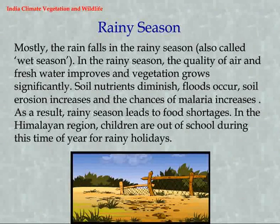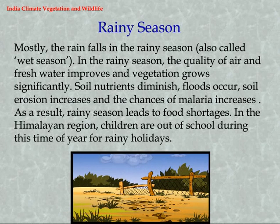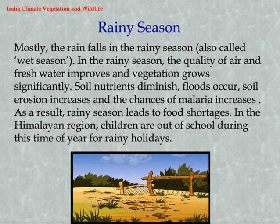Rainy Season. Most rain falls in the rainy season, also called wet season. In the rainy season, the quality of air and fresh water improves and vegetation grows significantly. However, soil nutrients diminish, floods occur, soil erosion increases, and chances of malaria increase. As a result, the rainy season can lead to food shortages. Children in the Himalayan region are out of school for rainy holidays.